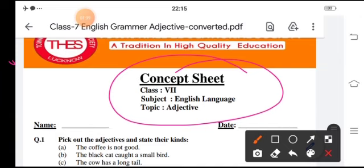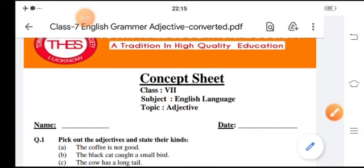Then fifth one is possessive adjective which shows the ownership or belonging of a person or a thing. And last one is the interrogative adjective which are the words that are used to ask for information, like whose bag is this, which train goes to Dehradun. Now we will see this concept sheet.